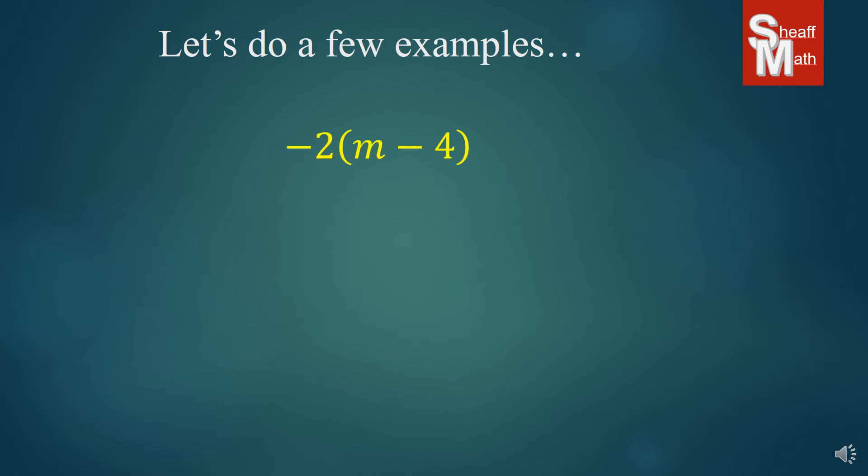Now we have negative 2 times the quantity m minus 4. So we multiply negative 2 times m and negative 2 times negative 4. And we add the products of both of them. So we get negative 2m plus negative 2 times negative 4 is a positive 8. And so there's our answer.